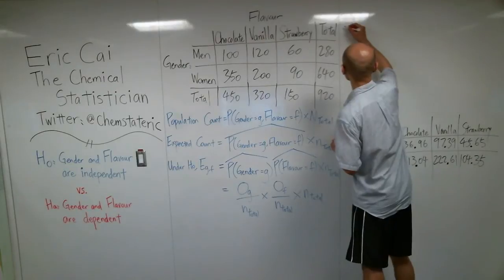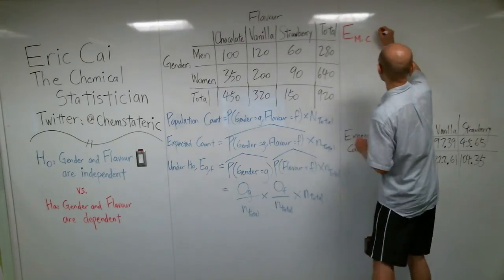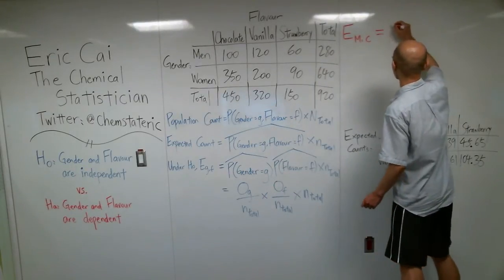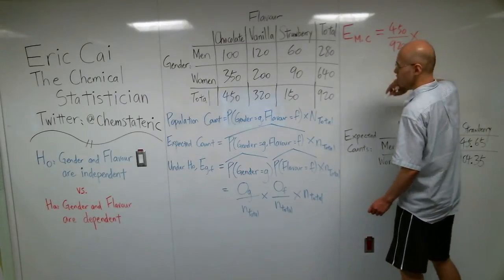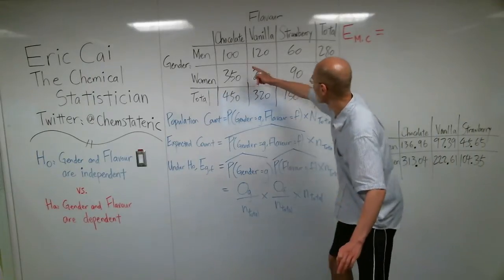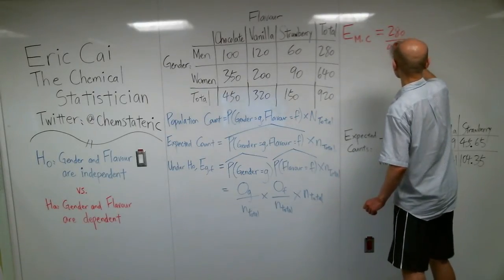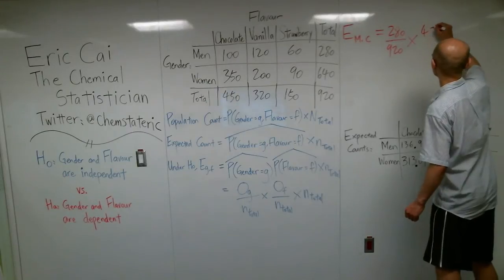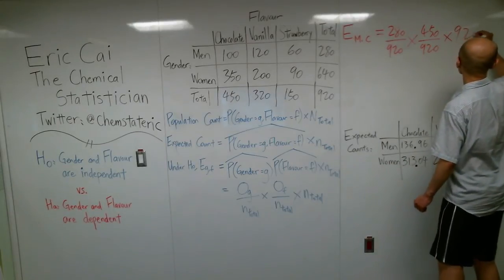Let's say if we're interested in the expected count of men who prefer chocolate. That is equal to 450, the observed proportion of men, divided by 920. I'm sorry, my apologies. The observed proportion of men is 280 divided by 920, times the observed proportion for chocolate, which is 450 divided by 920, times this grand total, which is 920.